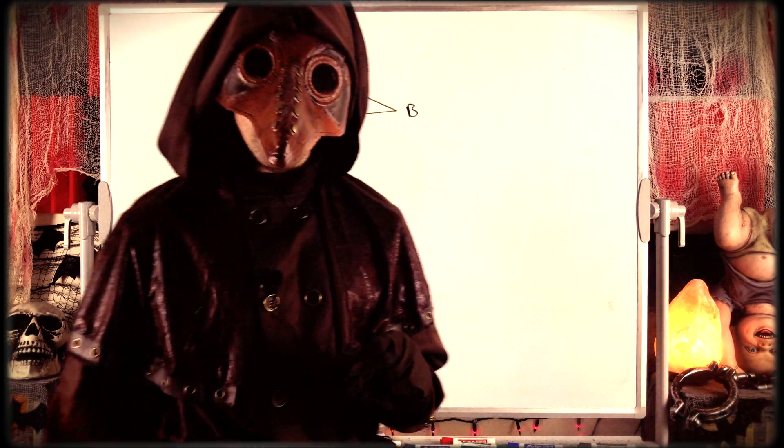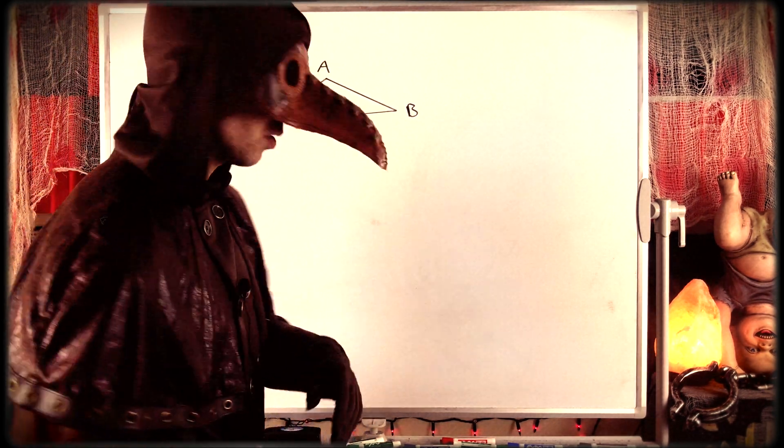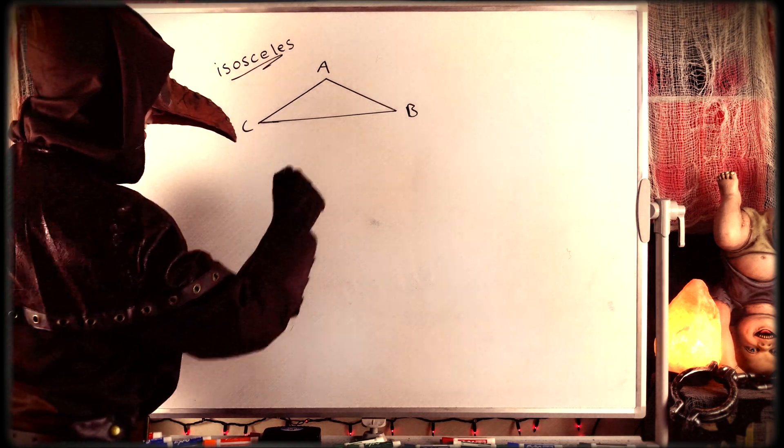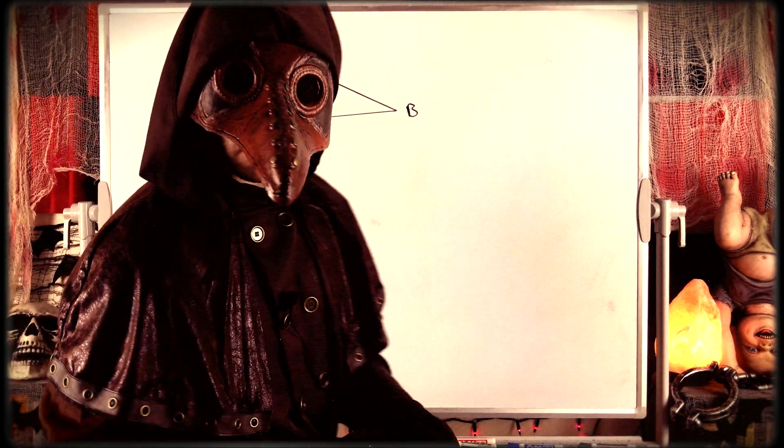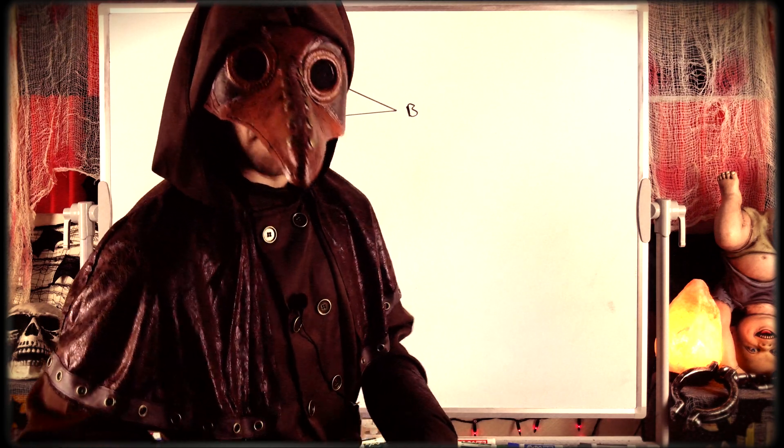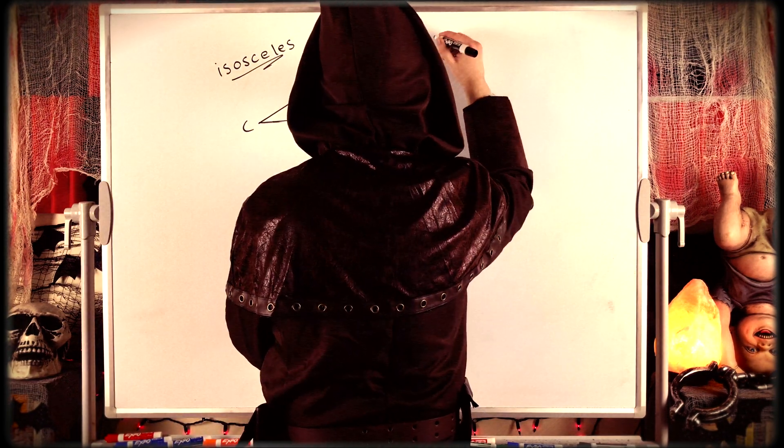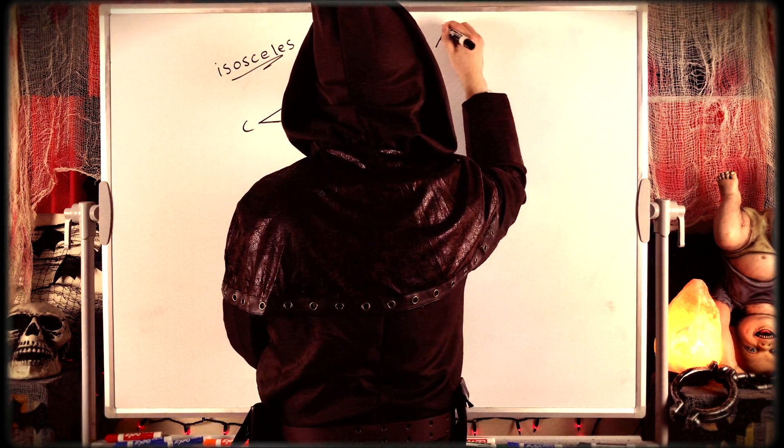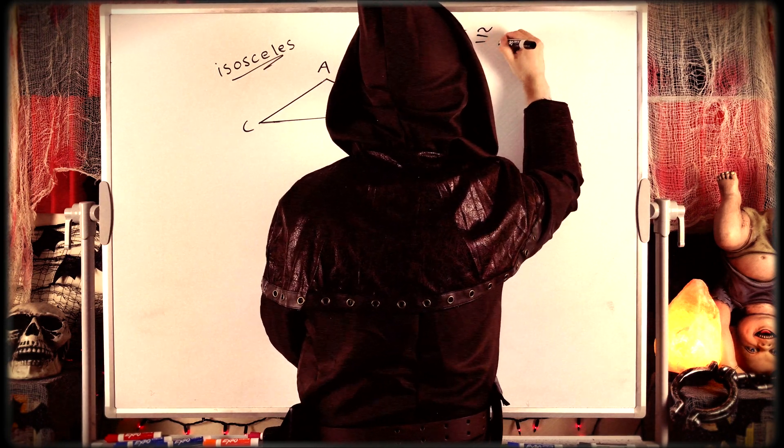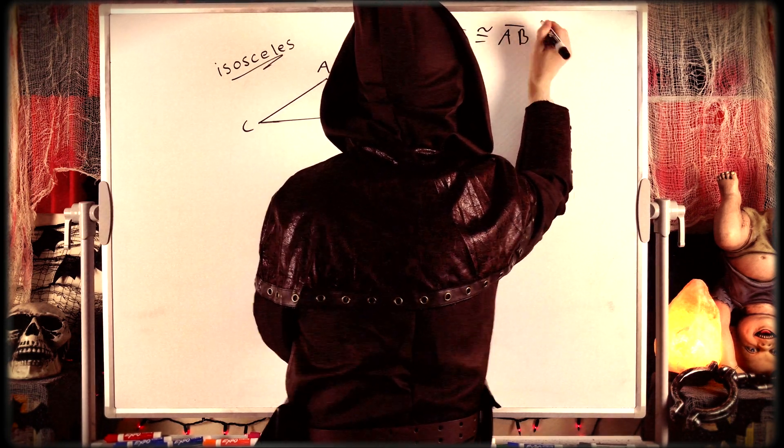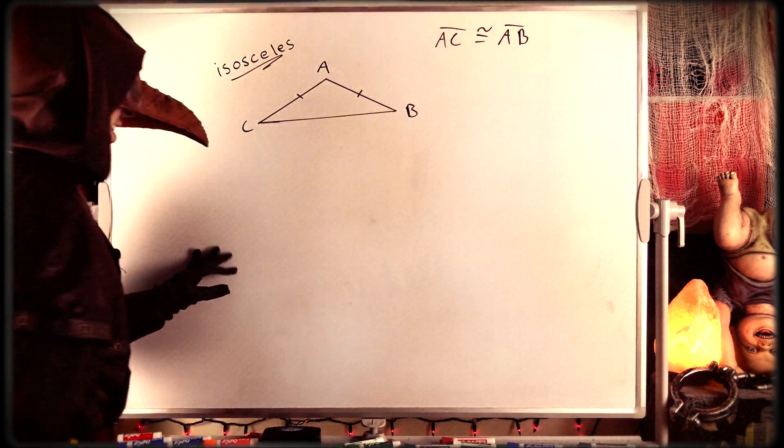Recall that an isosceles triangle is a triangle that has at least two sides congruent to each other. So for this triangle here, side AC is congruent to side AB. Better go ahead and write that on the board. So that's what an isosceles triangle is, a triangle with at least two congruent sides. And again here, our side AC is congruent to side AB, which we can write like that. And we might denote that on our triangle by putting a little hash mark on the congruent sides.